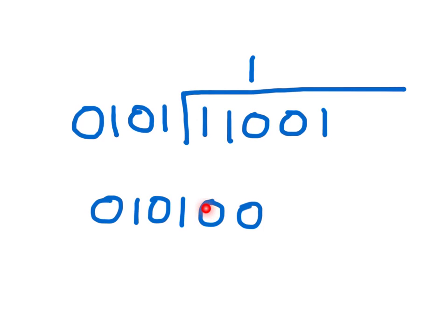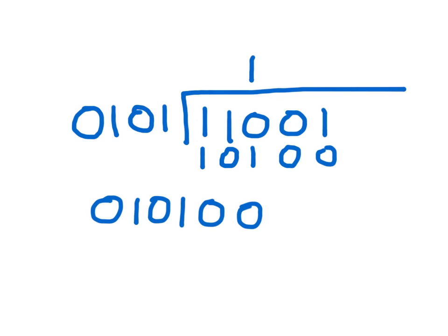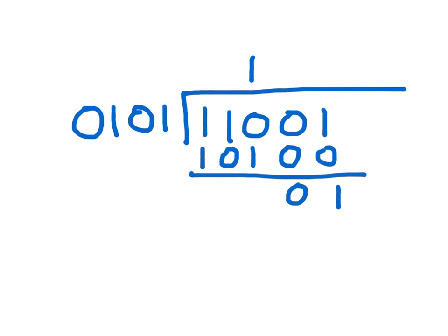When you multiply by 2 you add one zero; by 4 you add two zeros; by 8 you'd add three zeros. We write 10100 underneath and subtract: 1 minus 0 is 1, 0 minus 0 is 0, 0 minus 1 requires borrowing — we look at the whole set and 2 minus 1 is 1, then 1 minus 1 is 0, and we see we are left with the number we started with.